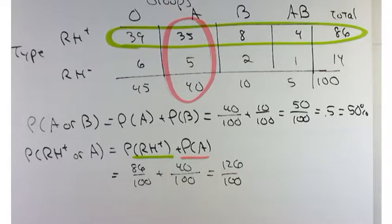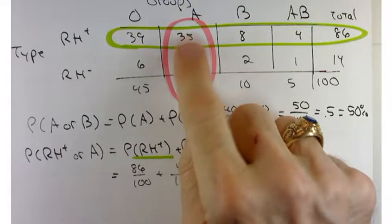How would you describe the double counted group? Yeah, so we double counted this group right here of A positive.